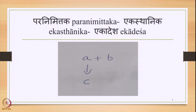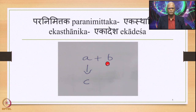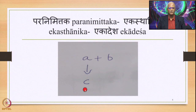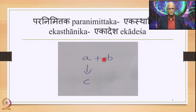This can be shown diagrammatically where you have A followed by B in close proximity in Samhita mode. In this environment of B following, which is Par, A is substituted by C. This is Paranimittaka, Ekasthani, and Ekadesha. So A plus B is the input and C plus B is the output.